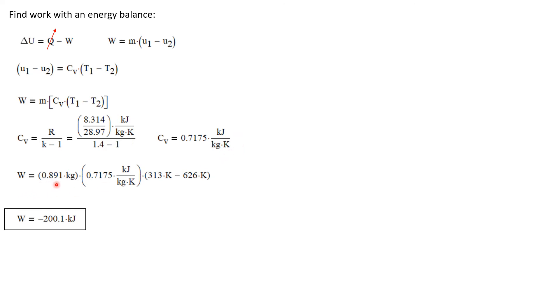Now we can solve for work. It's the mass 0.891 kilograms times C sub V we just calculated times T1 minus T2. And we get the work is minus 200.1 kilojoules. The negative sign indicating that the work had to be supplied to this system in order for this process to take place. And because we put energy into the system via the paddle wheel, we expected this negative value.